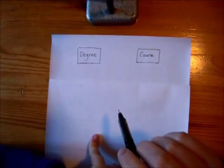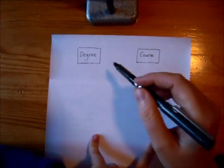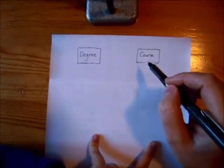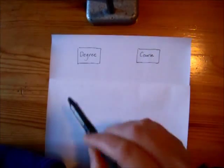What should the relationship between degree and course be? Well, obviously they're related. We want to be able to express the real-world fact that SEOC, the course SEOC, is part of the degree, software engineering.